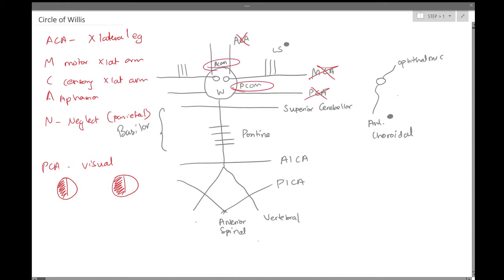Now we can talk a little bit more about ACOM and PCOM. ACOM is going to be the number one site for aneurysms, and common things that give us aneurysms are going to be ADPKD, or autosomal dominant polycystic kidney disease, or Marfan's and other connective tissue disorders that increase the likelihood of aneurysmal formation.